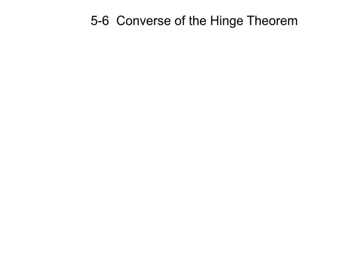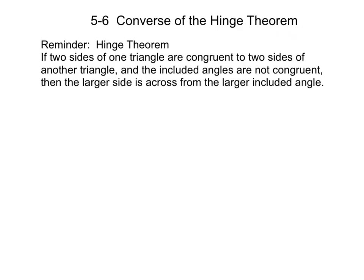Last lesson we talked about the hinge theorem, so today we're going to talk about the converse of the hinge theorem, and this is still in section 5-6. First let's look at a reminder of what the hinge theorem says: if two sides of one triangle are congruent to two sides of another triangle, and the included angles are not congruent, then the larger side is across from the larger included angle.